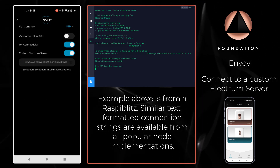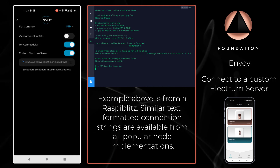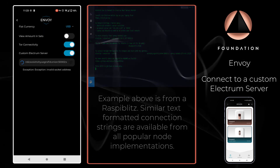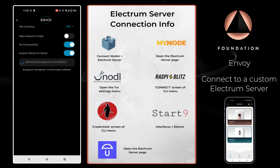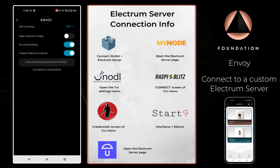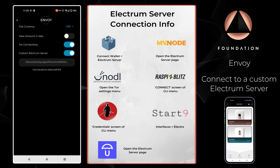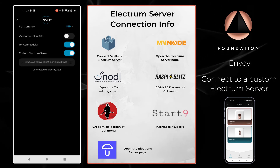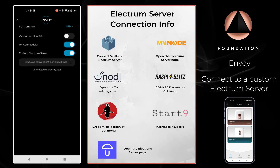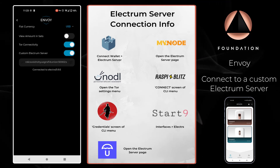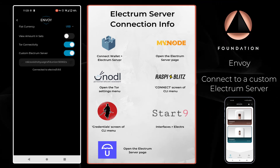But let's suppose you're running an implementation that isn't mentioned on screen, or a custom node that doesn't have a custom pairing URL like we've just seen with the Raspi Blitz example. You can still pair Envoy to that type of server.